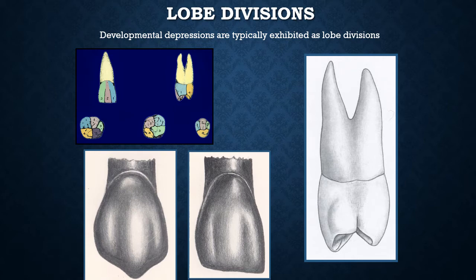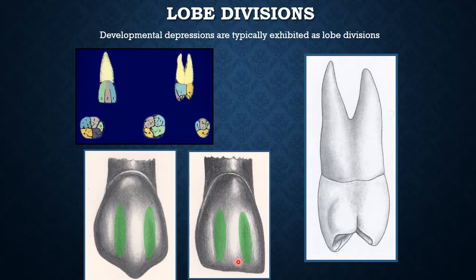Developmental depressions are found between the lobes in anterior teeth. There is a developmental depression between the middle lobe and the distal facial lobe, and another between the middle lobe and the meso-facial lobe. On the maxillary first premolar, a developmental depression can be seen longitudinally on the crown as well as the root, corresponding to the areas where the meso-facial, middle facial, and disto-facial lobes joined.